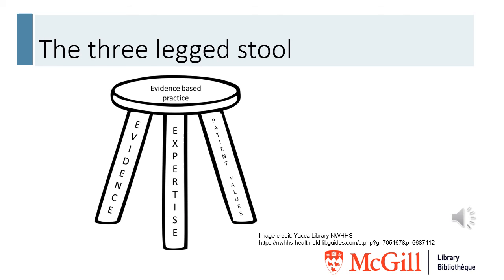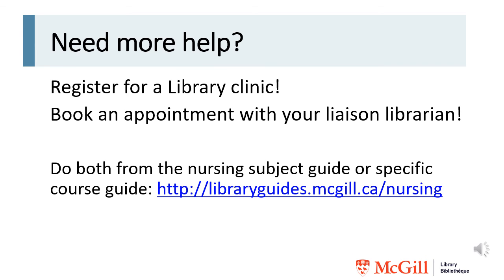Whether you call it evidence-based medicine, evidence-informed practice, or evidence-based practice, and whether you use a 5-step, 7-step, or other model, best evidence is only part of the picture. It's equally important to include clinical expertise and judgment in your decision making. Making sure to respect and include the values of your patients is essential. Imagining a three-legged stool is helpful because you need all three legs in order for the stool not to fall down. If you need help on this curious adventure, register for a library clinic or book an appointment with your liaison librarian. You can do both from the nursing subject guide, a specific course guide, or the modules. Be sure to complete all the modules before making an appointment because you may find that your questions have been answered. Thank you.